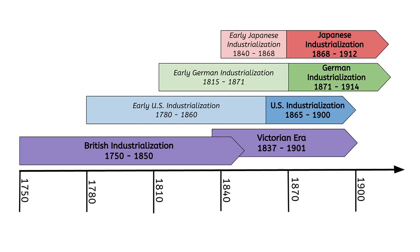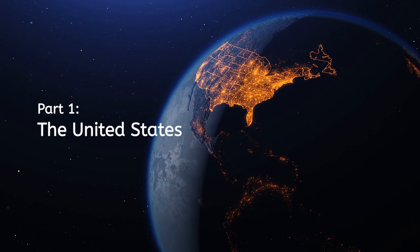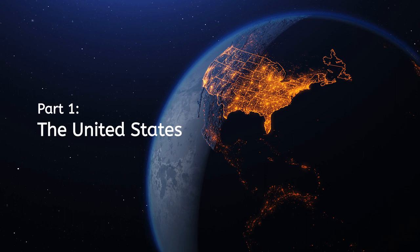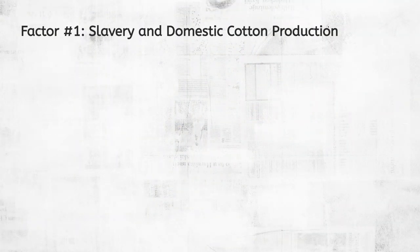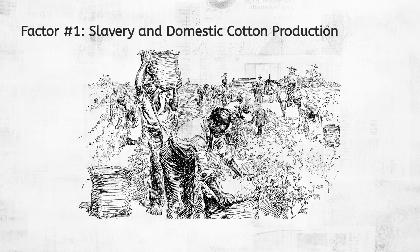Next, we'll explore the factors that affected how and when different nations industrialized by examining three case studies: the United States, Germany, and Japan. Part 1 – The United States. Factor number 1 – Slavery and Domestic Cotton Production. As you previously learned, early industrialization in the U.S. focused on textiles. Southern plantations and slave labor provided the cotton necessary for the textile industry.